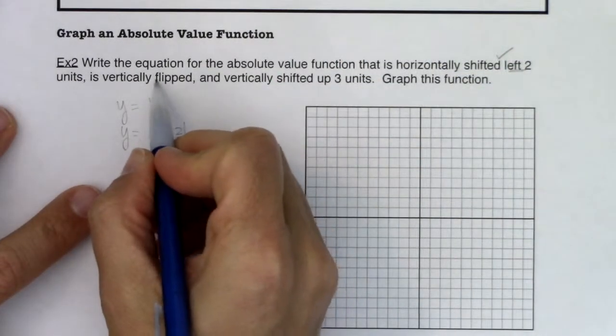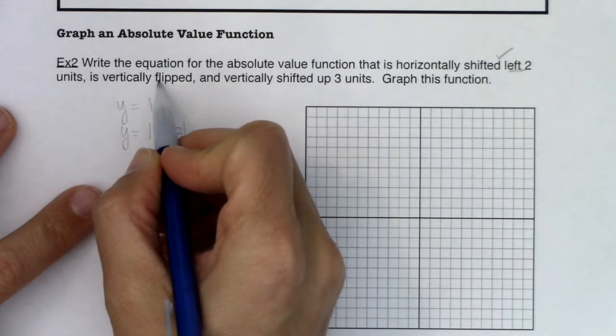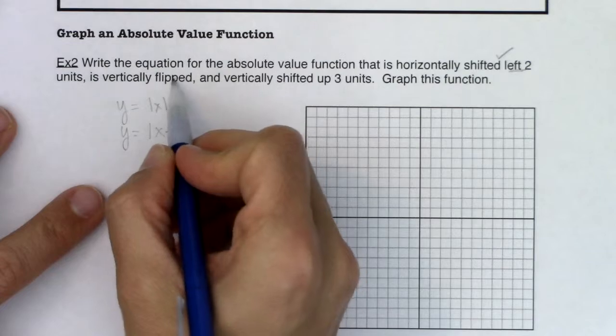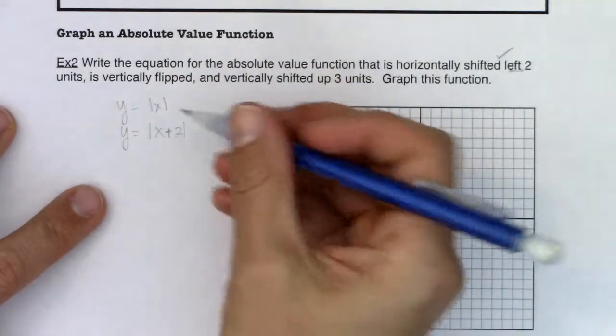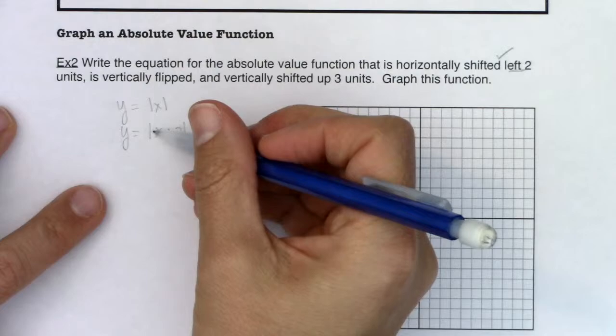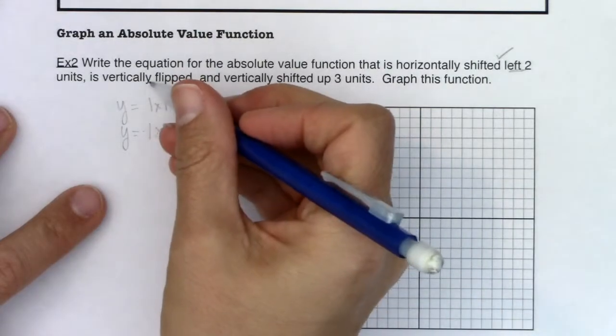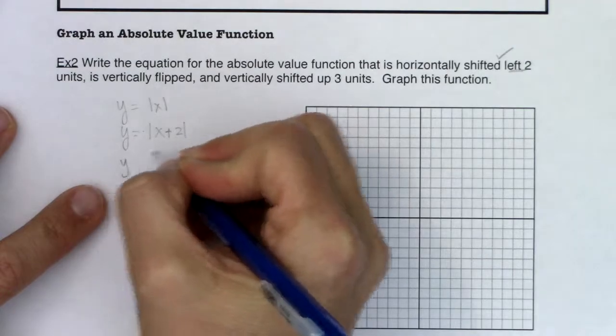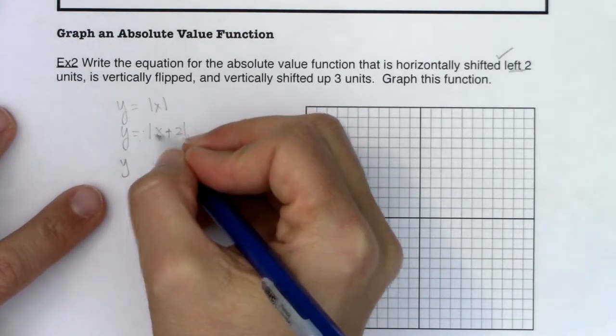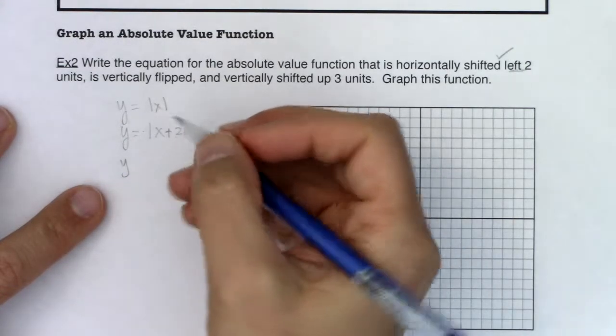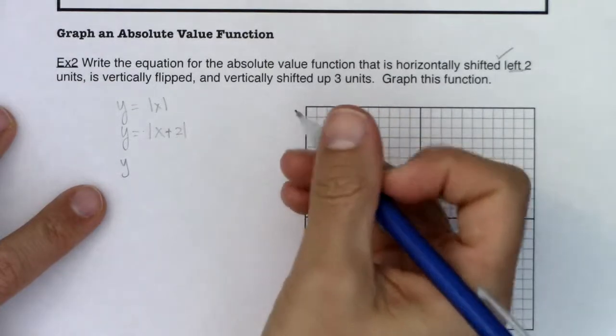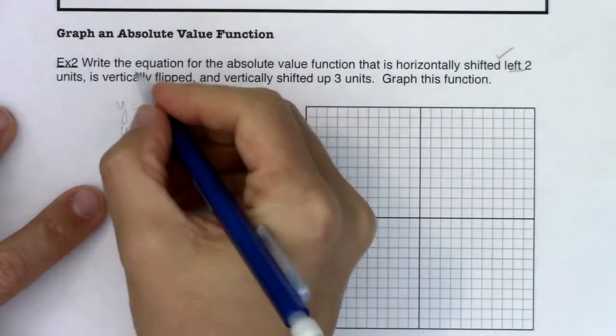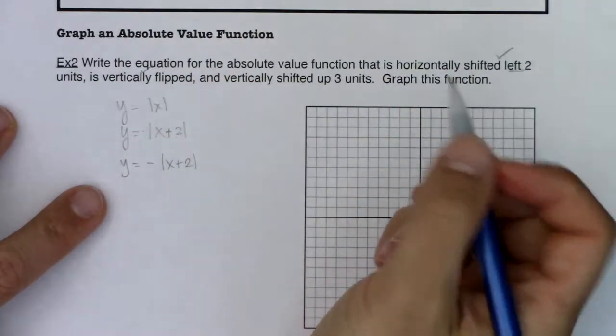All right, so I've got left two, the next thing I need to do is vertically flip. Well, if I'm vertically flipping, or anytime I flip, whether I reflect over my x or y axis, I have to add a negative symbol. And it comes down to do you add it inside the parentheses or outside? Well, when it's a vertical flipping, you're going to add it outside the parentheses, or I should say in this case, outside the absolute values. You want to add it outside your grouping symbol. So here we go, negative absolute value of x plus two.